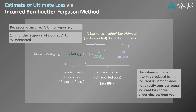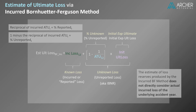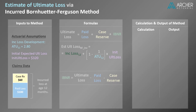Let's use the formula to estimate ultimate loss. Estimated ultimate loss via the incurred BF method equals incurred loss of $160 plus 64.3% times $320. The 64.3% represents the expected percent unreported at age 12, calculated using the age-to-ultimate factor of 2.8. Solving the formula, we get an estimate of ultimate loss of $366.